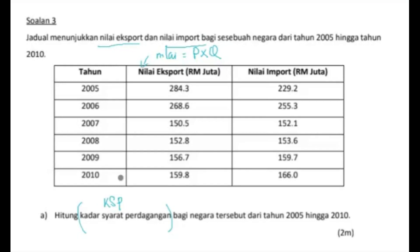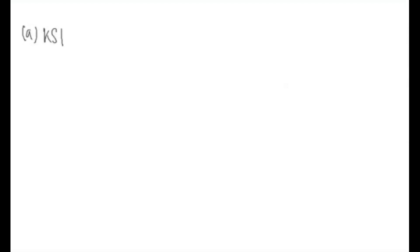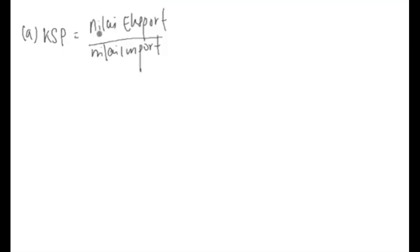Saya nak beritahu, kalau anda nampak KSP yang guna indeks harga, itu sebenarnya merujuk kepada rumus ikut sukatan lama. Kalau ikut sukatan terkini, kita tak pakai indeks harga dah. Jadi rumus yang terkini yang kita pakai: KSP sama dengan nilai ekspor bahagi dengan nilai import, kemudian darab 100.